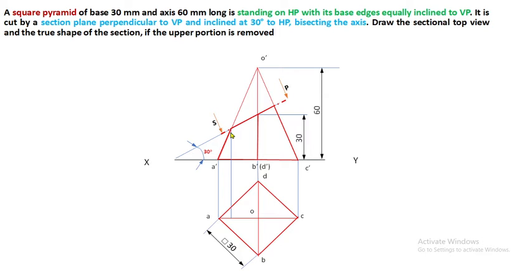Next, identify the cutting points of the section plane. This is point 1 — on slant edge O'A', extend the projector; the corresponding slant edge is OA, meeting at point 1' in the front view and point 1 in the top view. For the next cutting point, O'B' is cut at this point. However, OB is exactly perpendicular to the projector direction, so even if you extend the projector, you may not identify which point it is cutting.